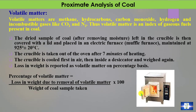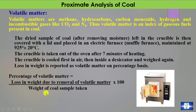Coming to volatile matter: volatile matter consists of methane, hydrocarbon, carbon dioxide, hydrogen, and incombustible gases like CO₂ and N₂. Thus volatile matter is an index of gaseous fuels present in the coal. The dried sample after removing moisture is covered with a lid and placed in a muffled furnace maintained at 925°C ± 20°C. The crucible is taken out after 7 minutes of heating, cooled first in air and then in a desiccator, and weighed. The loss in weight is reported as volatile matter on a percentage basis, equal to loss in weight due to removal of volatile matter divided by weight of coal sample taken, times 100.